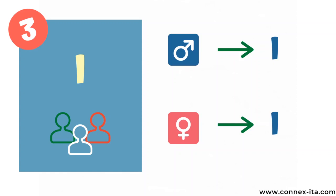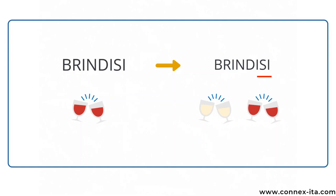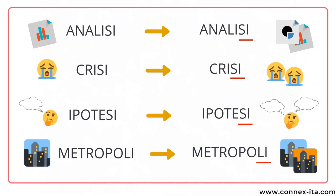The next group of words is even easier. They end in I, and in the plural they don't change. Generally they are feminine and not so common. There are not many masculine words in this category, so I'll only give you one example: brindisi, which means 'toast' — it doesn't change in the plural, brindisi. For the feminine words: analisi (analysis), crisi (crisis), ipotesi (hypothesis/theory), and metropoli (a very big city). None of these change in the plural.